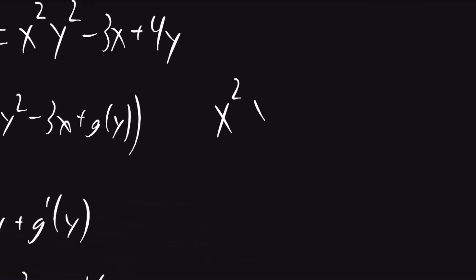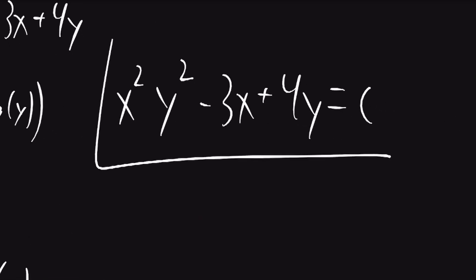So I can write this. x squared y squared minus 3x plus 4y is equal to c. And that is our final answer.